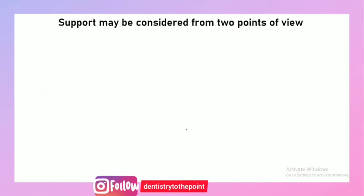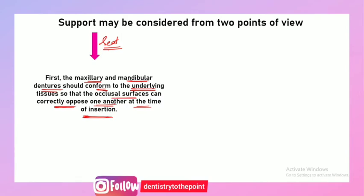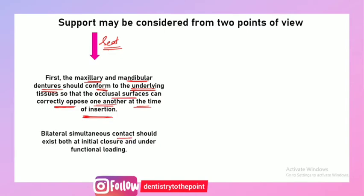Support may be considered from two points of view. First, the maxillary and mandibular dentures should conform to the underlying tissues — they should seat properly and effectively over the underlying tissues so that the occlusal surfaces can correctly oppose one another at the same time of insertion. There should be bilateral simultaneous contact, both at initial closure as well as during the functional loading of the denture, that is during functional movements.